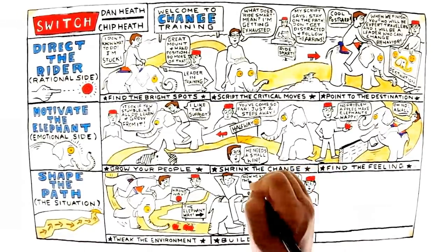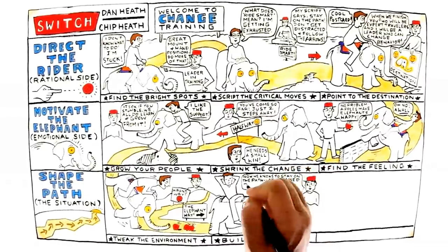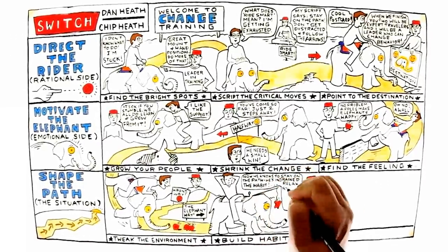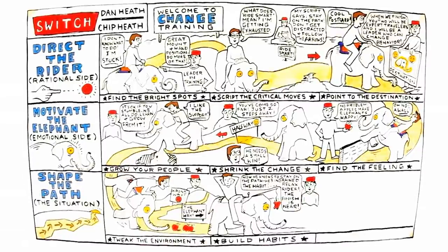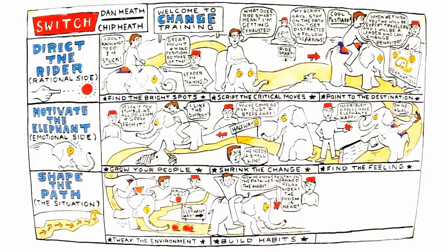They suggest two things to think about when building habits. One, the habit should serve and advance your mission. And two, the habit needs to be relatively easy to embrace. The Heath Brothers say, when behavior is habitual, it's free. It doesn't tax the rider.